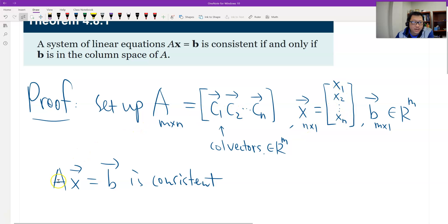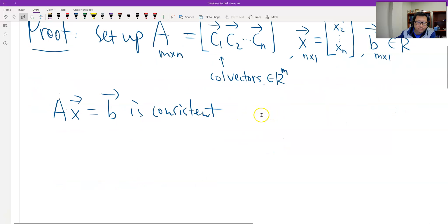Therefore, the matrix multiplication of A times x could be a linear combination of the column vectors, right? Okay, therefore the original linear system is equivalent to in this form, it's A consistent.